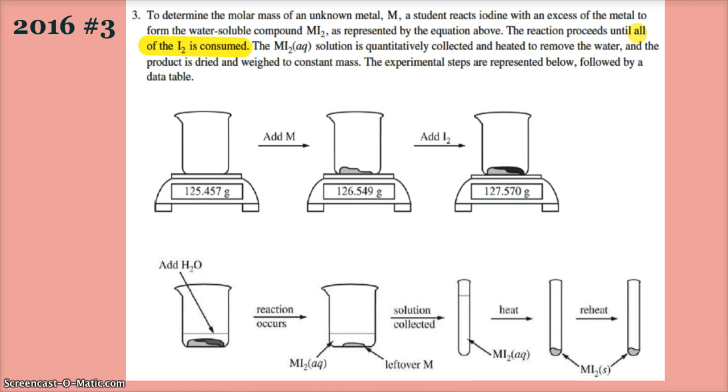To make the water-soluble compound MI2, represented by the equation above. Hold on one sec, there's the equation: M plus I2 makes MI2. So this reaction proceeds until all of the iodine is consumed, the metal is in excess.